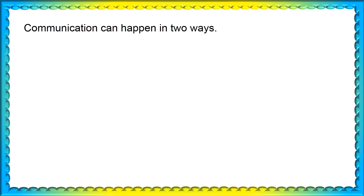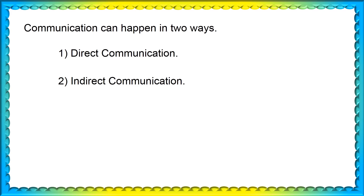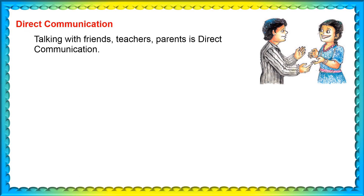Communication can happen in two ways. One is direct communication. Another one is indirect communication. What is direct communication? Talking with friends, teachers, and parents is direct communication.